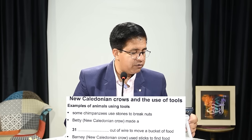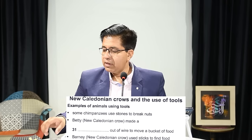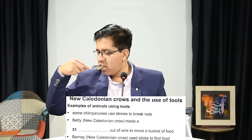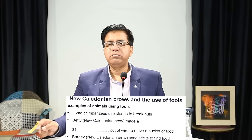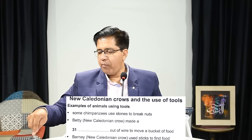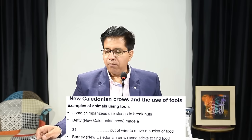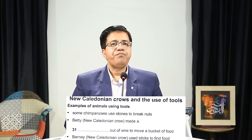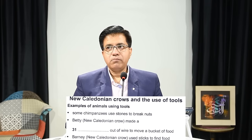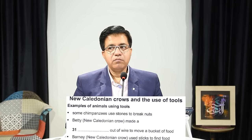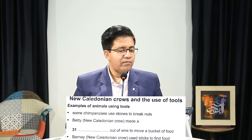The audio says: 'I'm going to talk today about research into a particular species of bird, the New Caledonian crow, whose natural habitat is small islands in the Pacific Ocean. Some chimpanzees are known to bang nuts on stones to break the shell. One New Caledonian crow called Betty bent some straight wire into a hook and used it to lift a small bucket of her favorite food from a vertical pipe.'